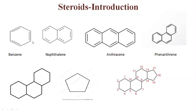This is benzene. When we fuse two benzene rings, it becomes naphthalene. Three fused benzene rings form anthracene, and this is the phenanthrene nucleus — only the fusion is different here. This is perhydrophenanthrene, which is saturated phenanthrene, and this is cyclopentene. When we fuse perhydrophenanthrene with cyclopentene, we get the basic skeleton of the steroid.